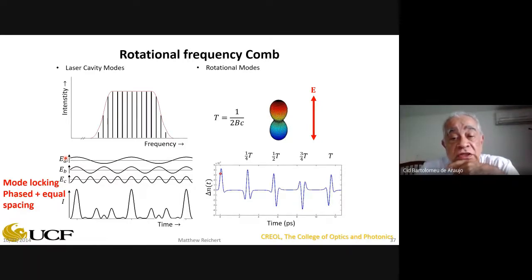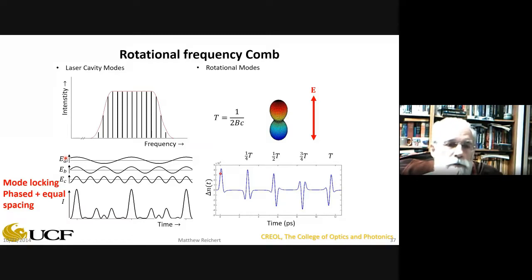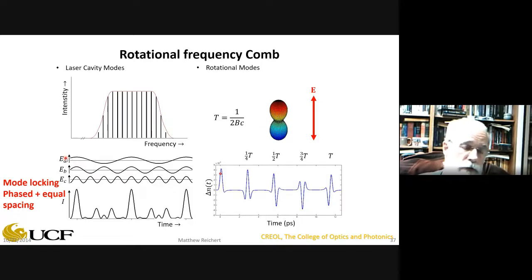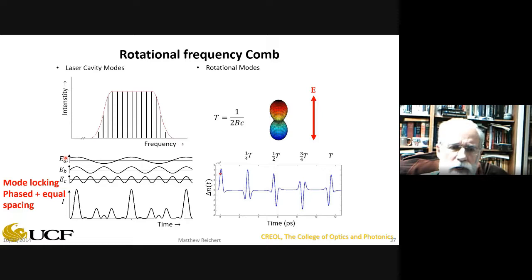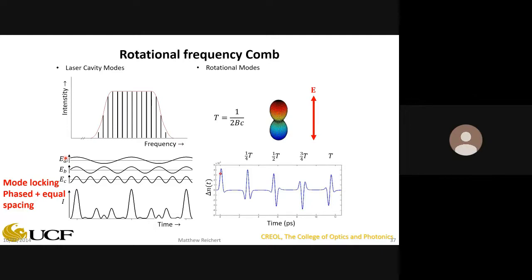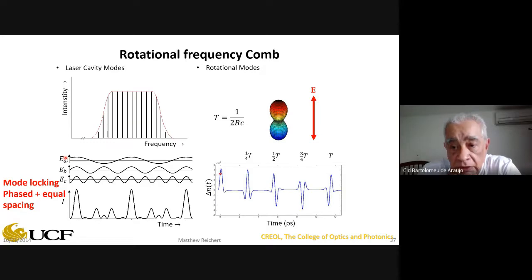Regarding three-photon absorption in CS₂ at 800 nm: yes, it exists, but all liquid-phase experiments were conducted at irradiances where it was a small effect. Phase changes were on the order of λ/100 at most. Higher-irradiance experiments to probe these higher-order effects have not yet been done.